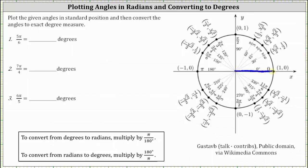For number one, we have five pi divided by six radians, or five-sixth pi radians. We need to rotate counterclockwise five-sixth pi radians. We know half a rotation counterclockwise is equal to pi radians, so if we divide this into six equal parts, each part will be one-sixth pi radians, and then we can easily count off five-sixth pi radians.